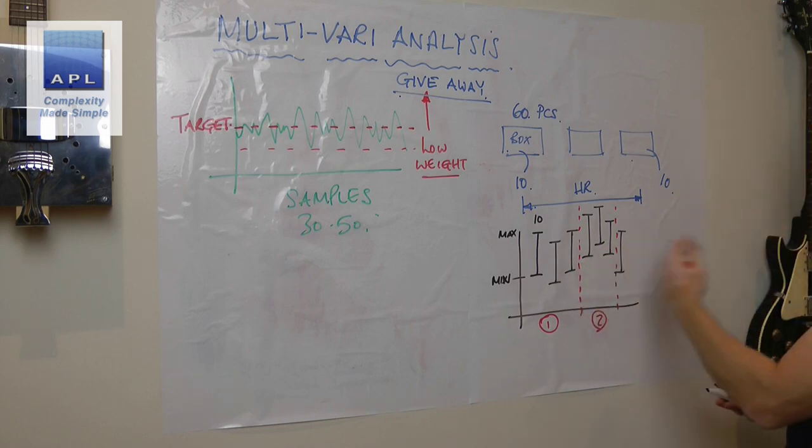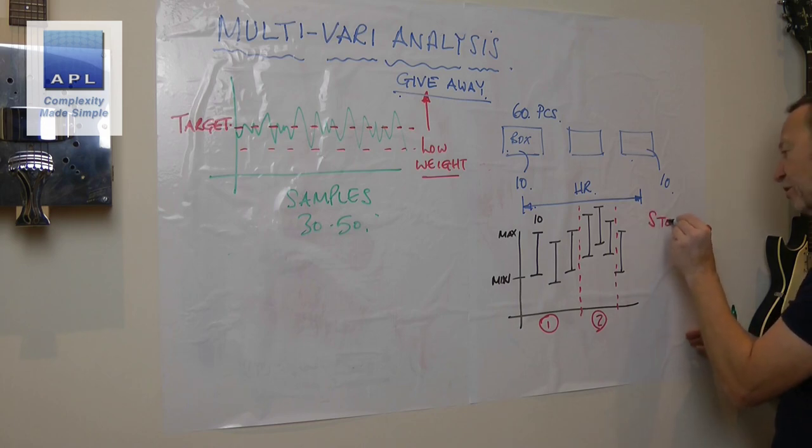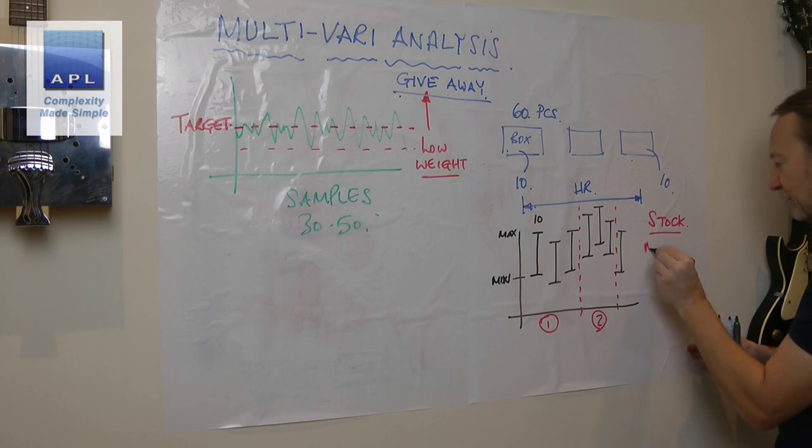The max and the minimum. So you see a within-box range, a box-to-box variability, and of course if you know that this is day one, this is day two, you're going to see the day-to-day variability as well.